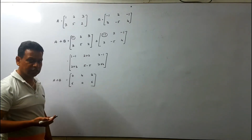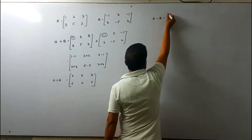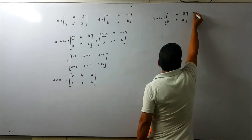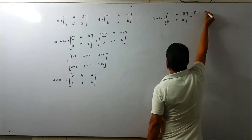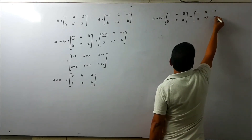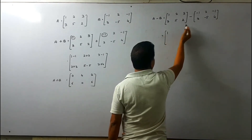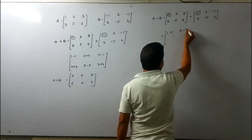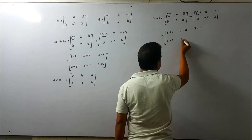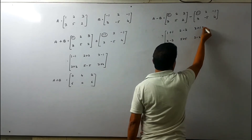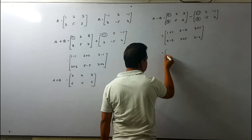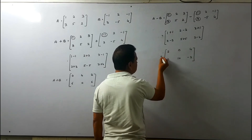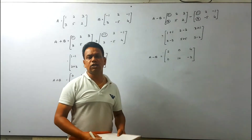Now for A minus B: matrix A is 1, 2, 3, 3, 5, 2 minus matrix B which is minus 1, 2, minus 1, 3, minus 5, and 4. We compute: 1 minus minus 1 equals 2, 2 minus 2 equals 0, 3 plus 1 equals 4, 3 minus 3 equals 0, 5 plus 5 equals 10, and 2 minus 4 equals minus 2. So A minus B equals [2, 0, 4; 0, 10, minus 2].